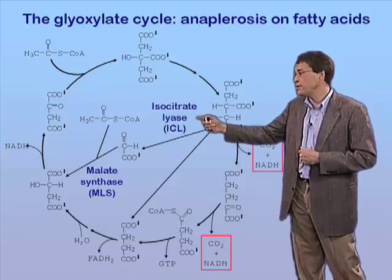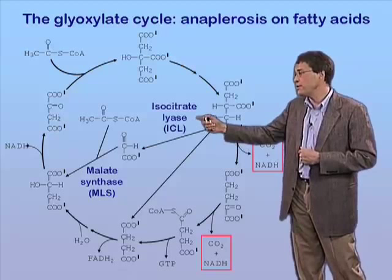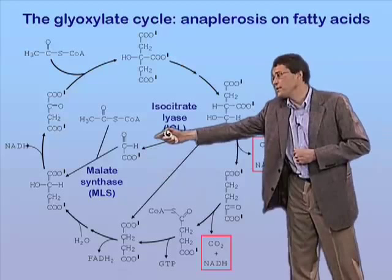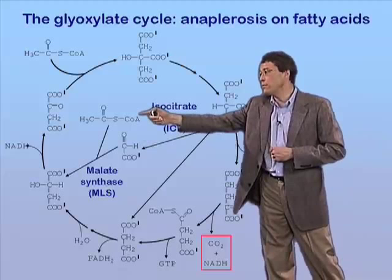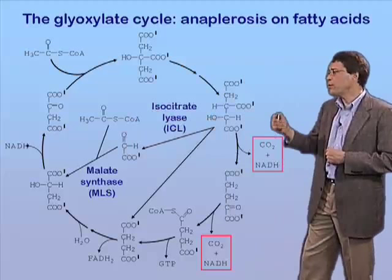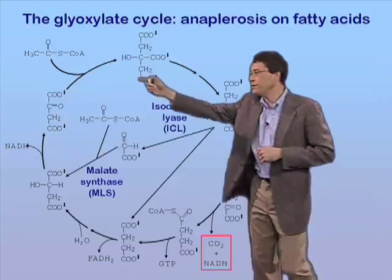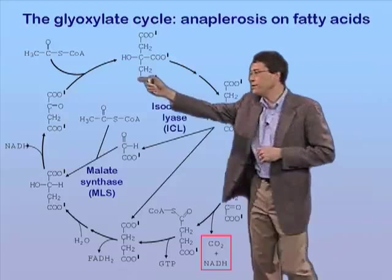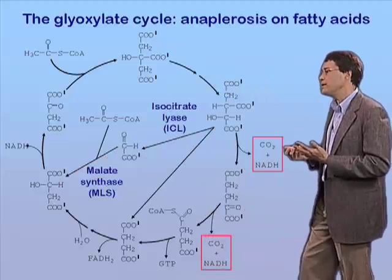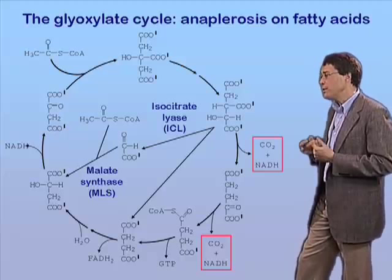The glyoxalate cycle is a very simple pathway comprising just two dedicated enzymes: isocitrate lyase, or ICL, and malate synthase, or MLS. ICL takes isocitrate from the citric acid cycle and splits it to form succinate and glyoxalate — from which the glyoxalate cycle gets its name. Malate synthase then takes that glyoxalate and condenses it with a second molecule of acetyl-CoA to make malate. The carbon-losing steps in the citric acid cycle are bypassed, and with each turn, four carbons coming from two acetyl-CoA molecules are fixed in the cycle as malate. We wanted to know what role this pathway plays in M. tuberculosis metabolism and physiology during infection.